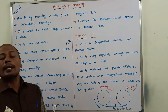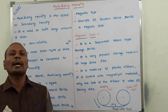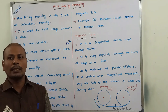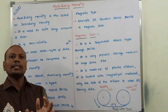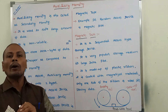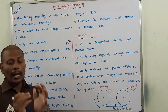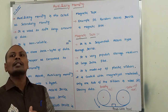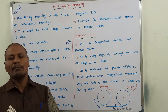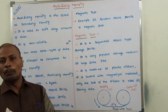Auxiliary memory is cheaper when compared to primary memory. In terms of cost, the cost of auxiliary memory is less when compared to primary memory such as RAM and ROM.